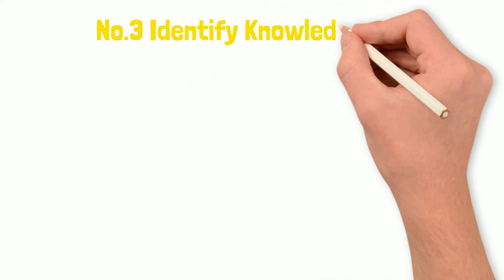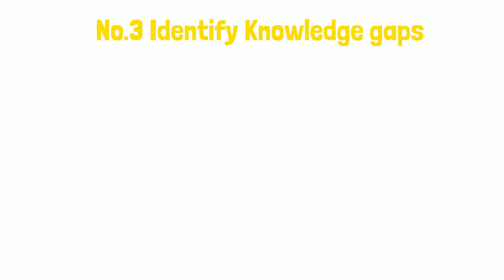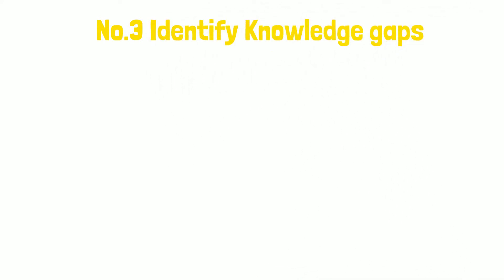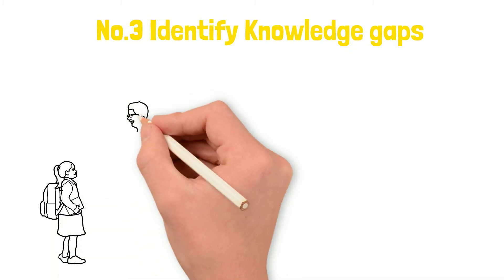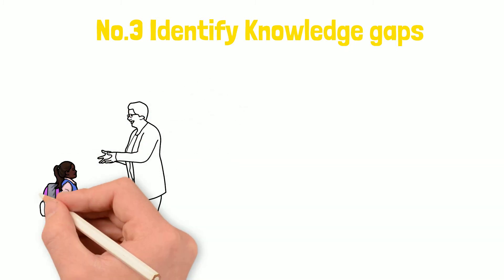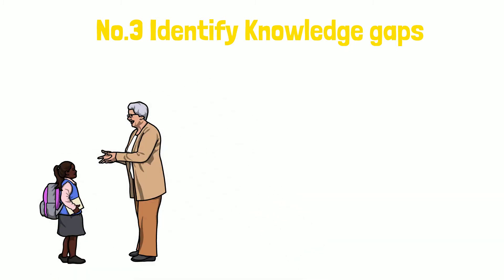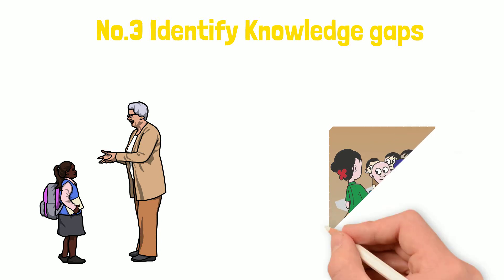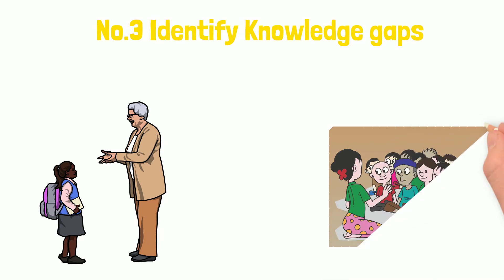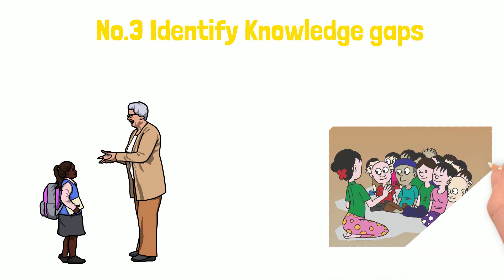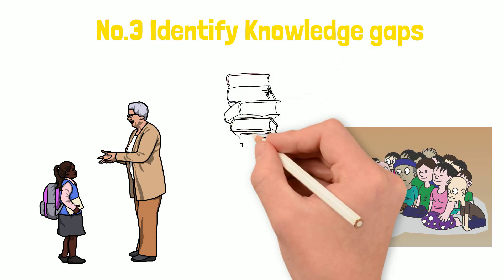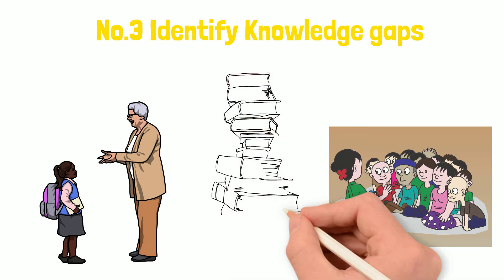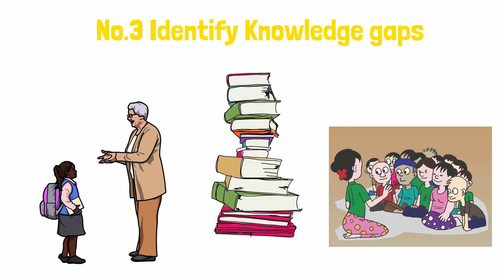Step 3: Identify your knowledge gap. While explaining the concept to the child, notice the places where it was hard to explain. Notice where you lacked knowledge and where you failed to explain the subject to the child. This is the step where real learning happens. After identifying the knowledge gaps, go back to the source and fill the voids.